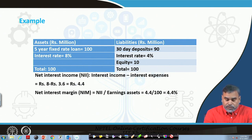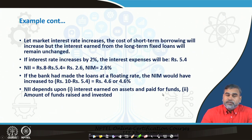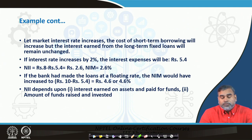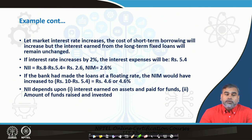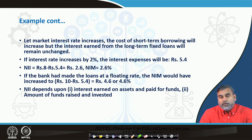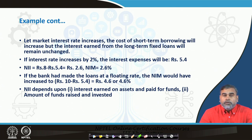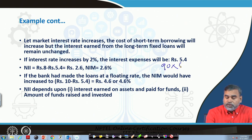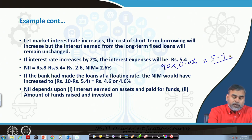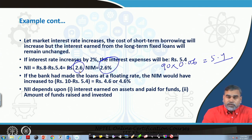Hypothetically, if the market interest rate increases, the cost of short-term borrowings will increase. But the interest earned from the long-term fixed loan remains unchanged because it is a fixed rate loan not exposed to market interest rate fluctuations. If the interest rate increases by 2 percent, expenses will increase to 5.4 million (90 × 6%), so net interest income falls to 2.6 million, and net interest margin becomes 2.6 percent.